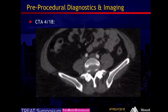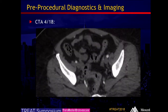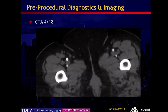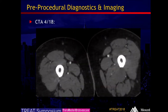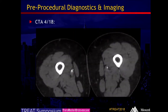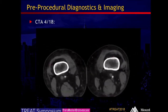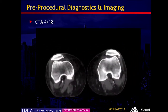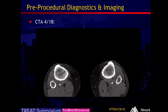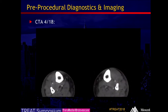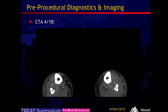Axial CT images demonstrate good arterial inflow bilaterally. Our right SFA stent is patent. On the left, we see some SFA disease, particularly through mid to distal SFA involving the pop. Lower down, it looks like we have three-vessel runoff bilaterally, at least on the CTA.